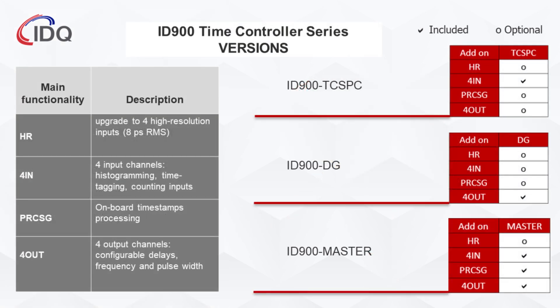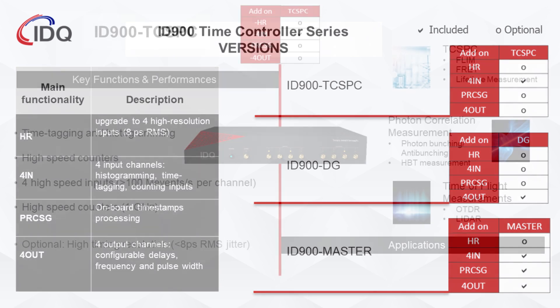The ID900 is available in three different versions, each with their own optional add-ons. These versions are the ID900TC SPC, DG, and Master.